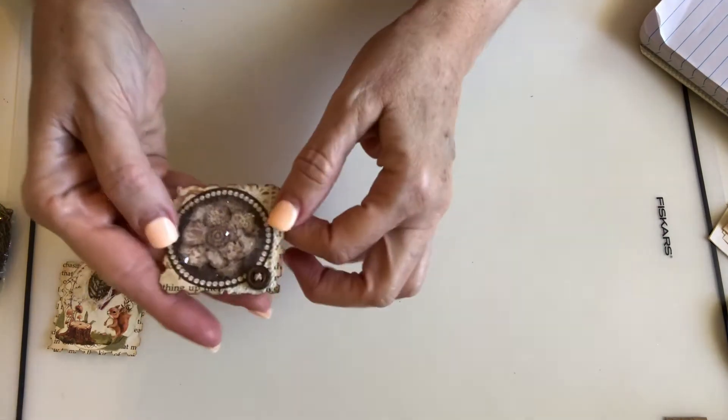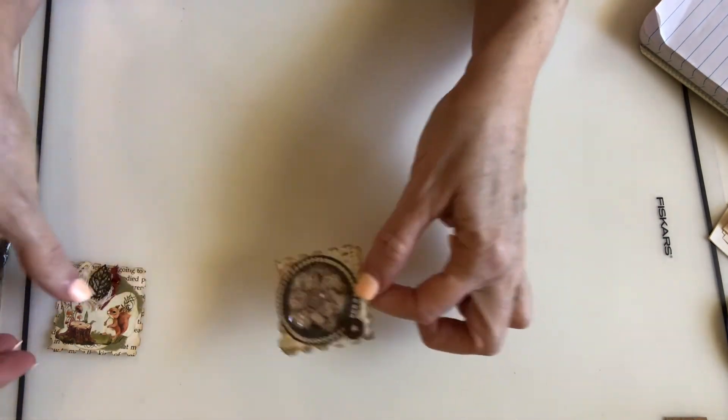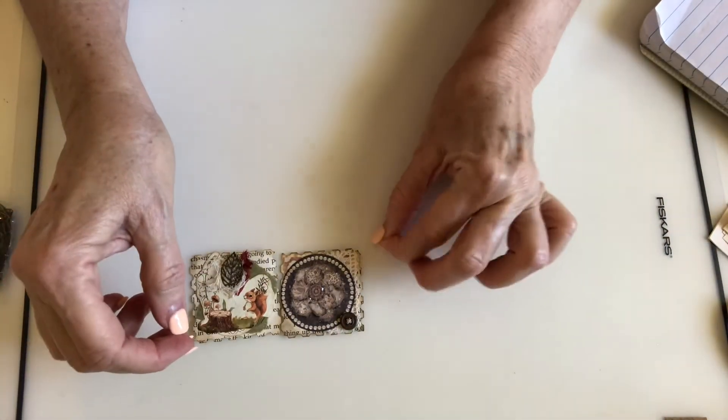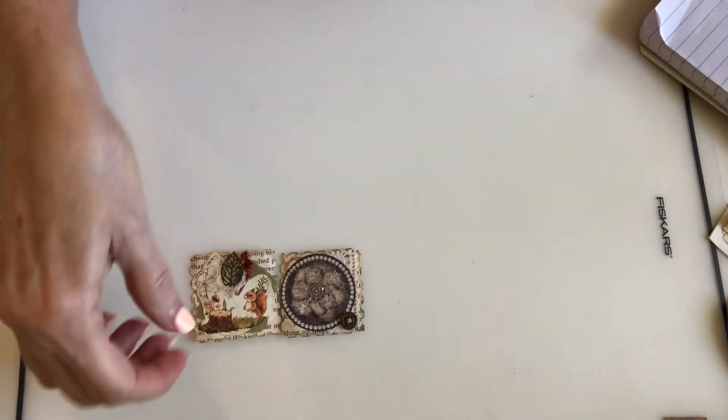Again, the back of this is just a book page that I've inked up around the edges and then I put everything else on top of it. So these are kind of like my vintage ones that I made. I'm going to put that away.